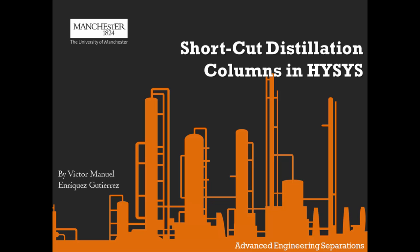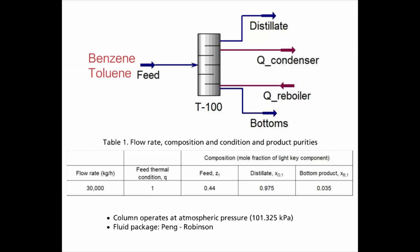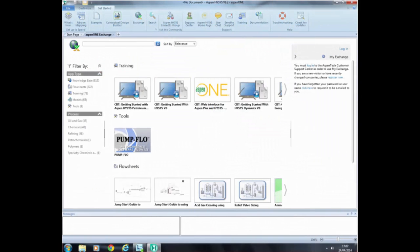This video is about how to set up a shortcut distillation column in Aspen HYSYS. The column will process 30,000 kg per hour of a feed containing a mixture of benzene and toluene. The thermal condition of the feed is equal to 1, and the composition of the feed is 0.44 in mole fraction of the light key component. The distillate product should have a composition of 0.975, and the bottom product should not exceed 0.035 in mole fraction of the light key component. The column should operate at atmospheric pressure, and the Peng-Robinson equation of state can be used to determine the thermodynamic properties of the mixture.